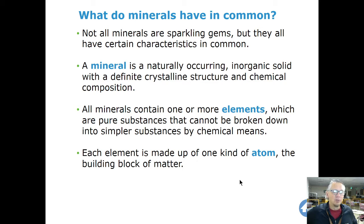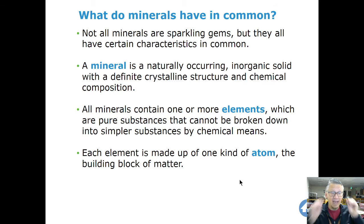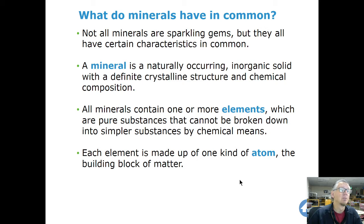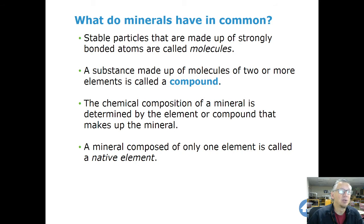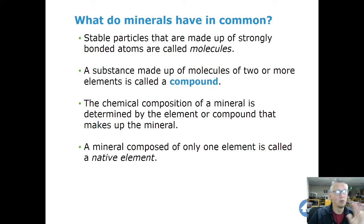A mineral can be an element, like lead or carbon, or it can be a compound, but it can't be a mixture. It's got to have a chemical composition. If a substance is made up of molecules of two or more elements, it's a compound. We went from elements to compounds, and now we're taking a look at minerals, and we'll be going into rocks. The chemical composition of minerals is determined by the compounds it's made up of.